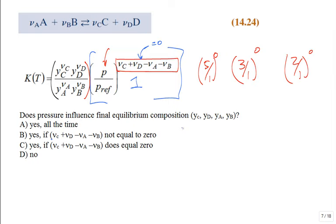So does pressure influence the final equilibrium composition? Yes, in general it does — but if the exponent is not equal to zero, it does, and if the exponent does equal zero, then it doesn't. The best answer depends on that exponent.